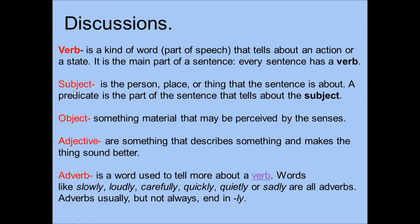Subject is the person, place, or thing that the sentence is about. A predicate is the part of the sentence that tells about the subject. Object is something material that may be perceived by the senses. Adjective describes something and makes the thing sound better. Adverb is a word used to tell more about a verb — words like slowly, loudly, carefully, quickly, quietly, or sadly are all adverbs. Adverbs usually, but not always, end in -LY.